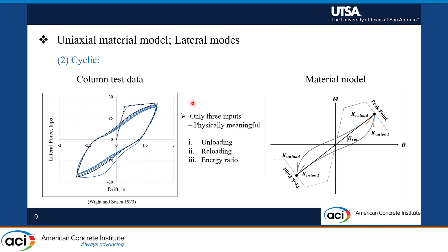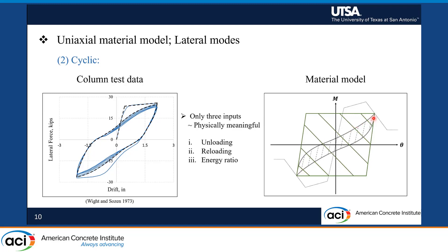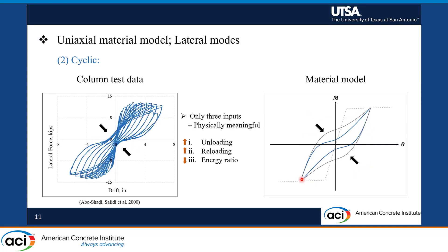For the cyclic behavior, the team spent quite a bit of time to get a simple mathematical expression to replicate the smooth changes of stiffness along the unloading and reloading branches. The team developed a new spline curve model that only needs three physically meaningful input parameters: unloading stiffness, reloading stiffness, and the energy ratio — which is the energy inside the hysteresis loop divided by the maximum energy in an elasto-plastic system, as shown in the green area. We also wanted the model to capture the pinching behavior seen in some column tests. By adjusting the unloading, reloading, and energy ratio, you can transform a big loop, shown in gray, into a more pinched behavior, shown in blue.